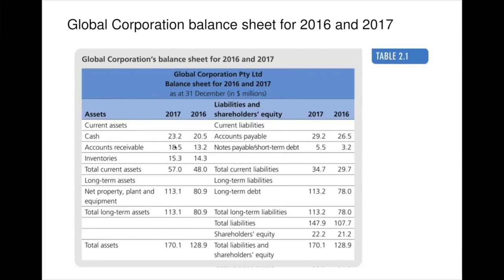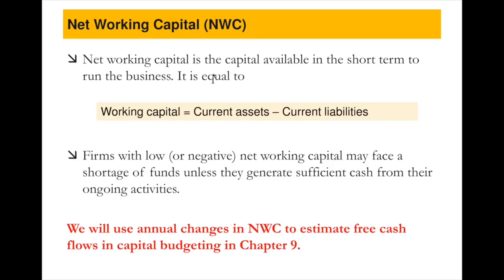This is an orange heading slide, meaning it contains an important concept we'll return to. Net working capital, or NWC, is the capital available in the short term to run a business. It equals current assets minus current liabilities — assets with less than 12 months of life minus liabilities within 12 months. We will use annual changes in NWC to estimate free cash flows in capital budgeting in chapter 9, so we will definitely come back to this terminology in week 9.